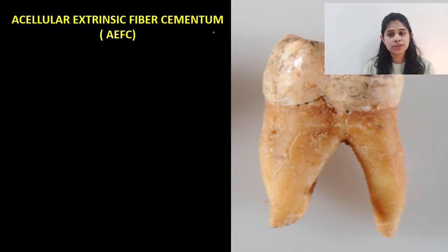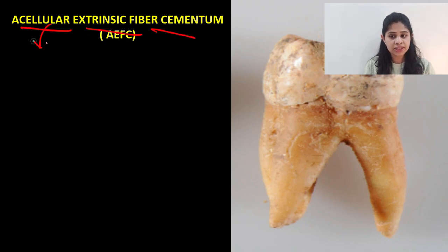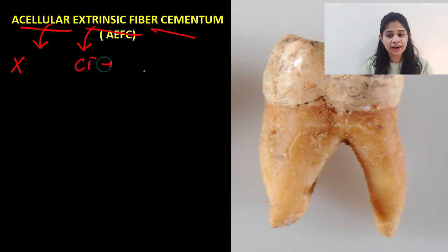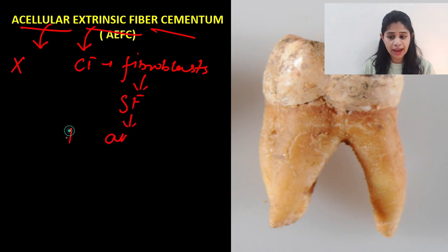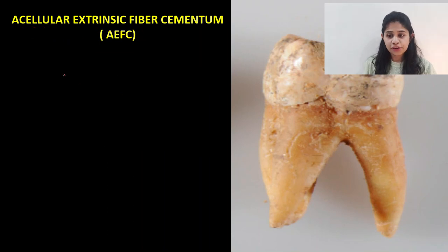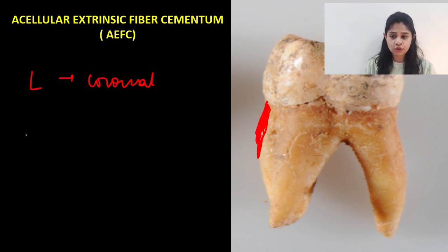The next type is acellular extrinsic fiber cementum. Acellular means it does not contain any cementocytes, whereas extrinsic fiber means it does contain collagen fibers derived from fibroblasts — these are essentially Sharpey's fibers. These Sharpey's fibers help in tooth anchorage to the adjoining bone. This type is present in the coronal half of the tooth and its thickness varies between 30 to 230 µm.